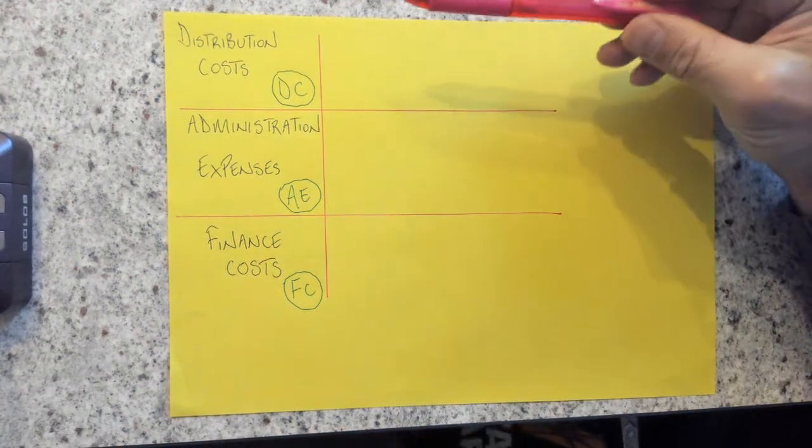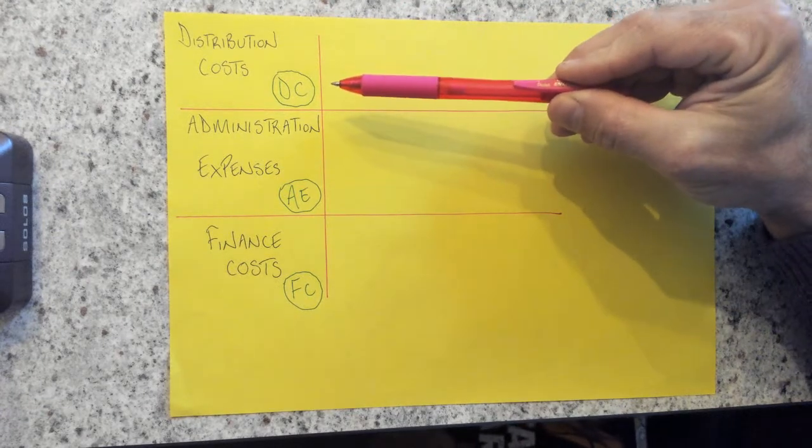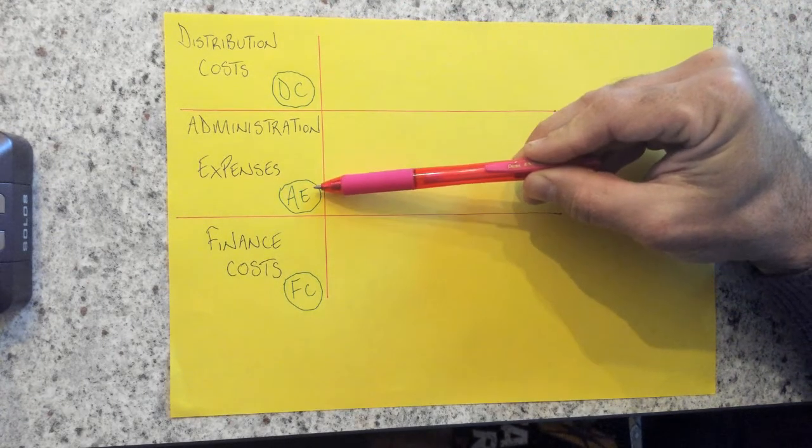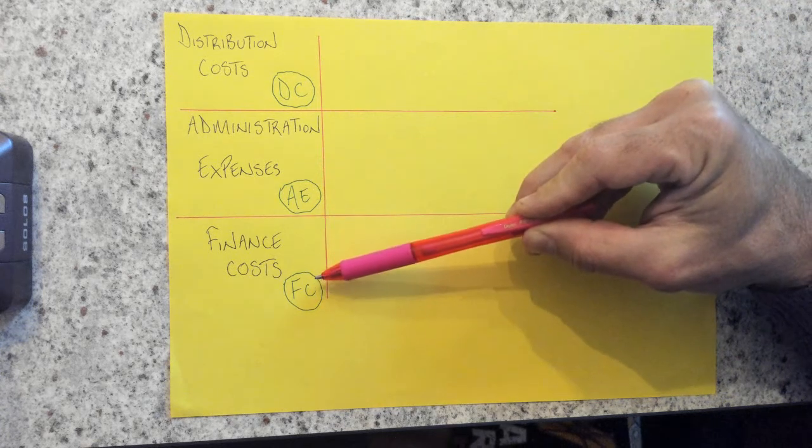So of course, when we classify our distribution costs, we're going to call a DC, an administration expense, an AE and a finance cost FC.